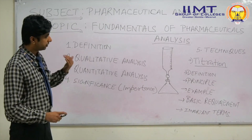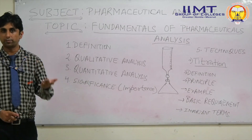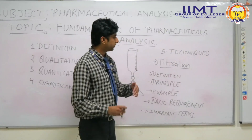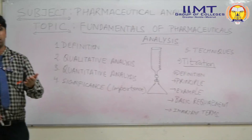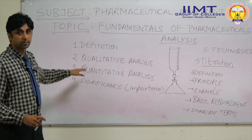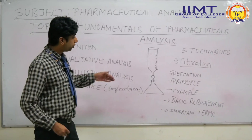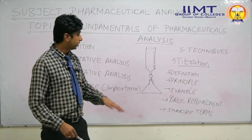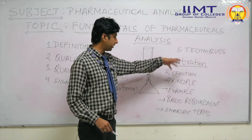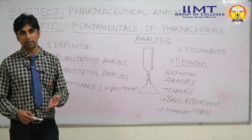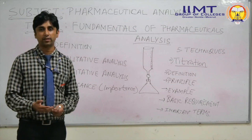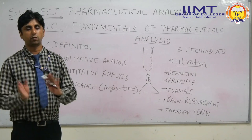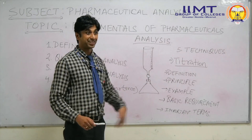The next question that arises is: how to do all this? That brings us to techniques. There are different techniques which can be employed for qualitative as well as quantitative analysis. First, we will start with titration, which we are going to study this semester. Titration is a process — it involves estimation of a substance: finding out the concentration of a solute, the analyte, and also finding out the percentage purity.